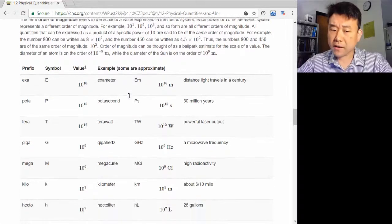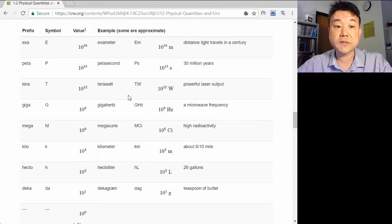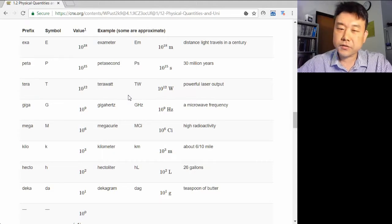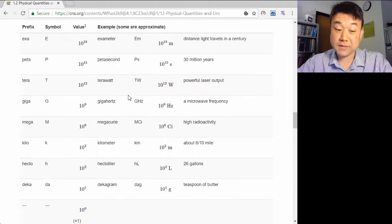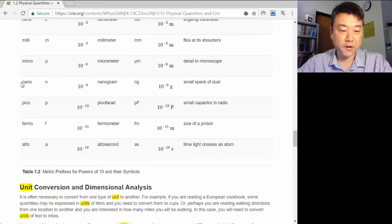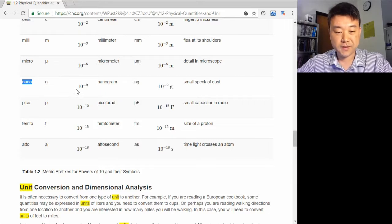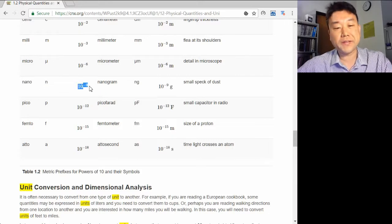I won't quite make you memorize them. You can include them in your formula sheet for exams. But it is a good idea to know them well. You can impress your friends with your knowledge of just how small a nanometer is compared to a meter. It's one billionth of a meter.